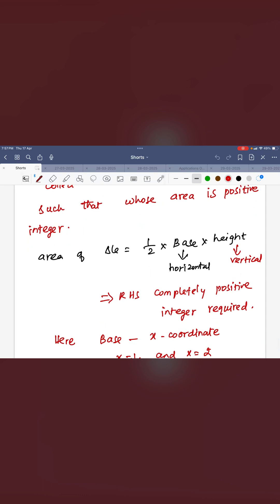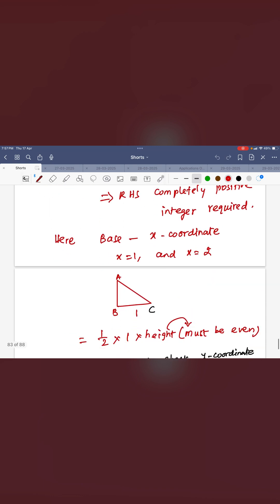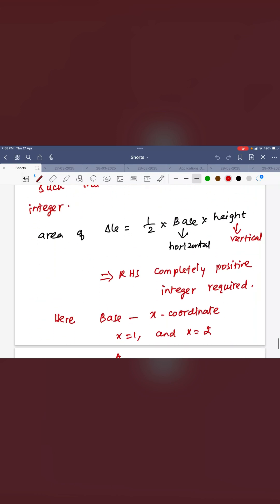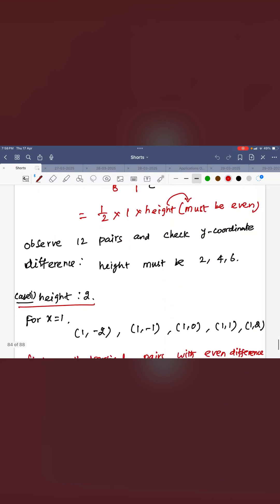It just depends on the height, vertical distance. You have to check it here. The 2, 4 and 6 only possible among all the 12 pairs, the difference of the y coordinates, 2, 4, 6 only possible.